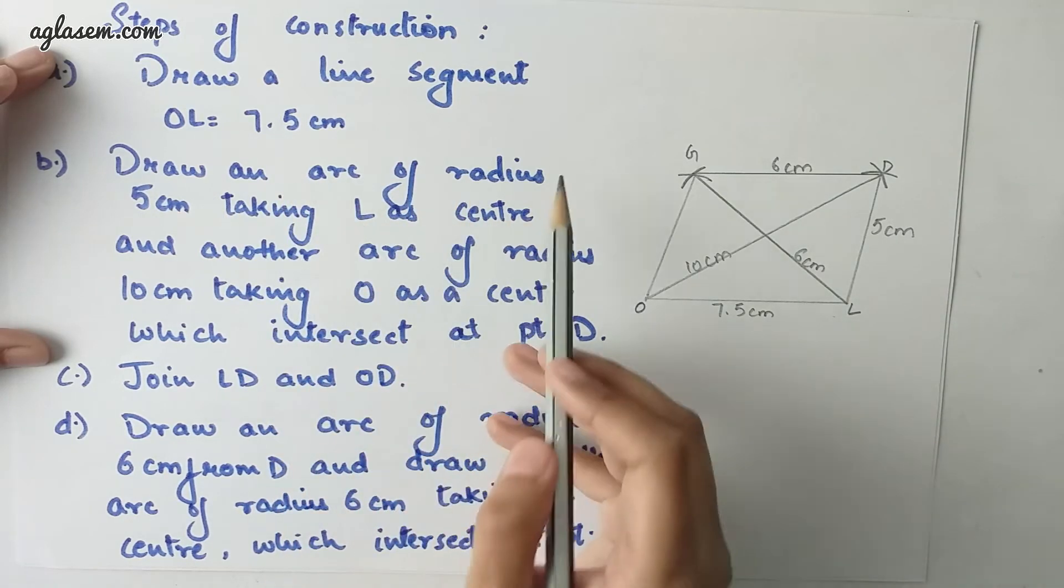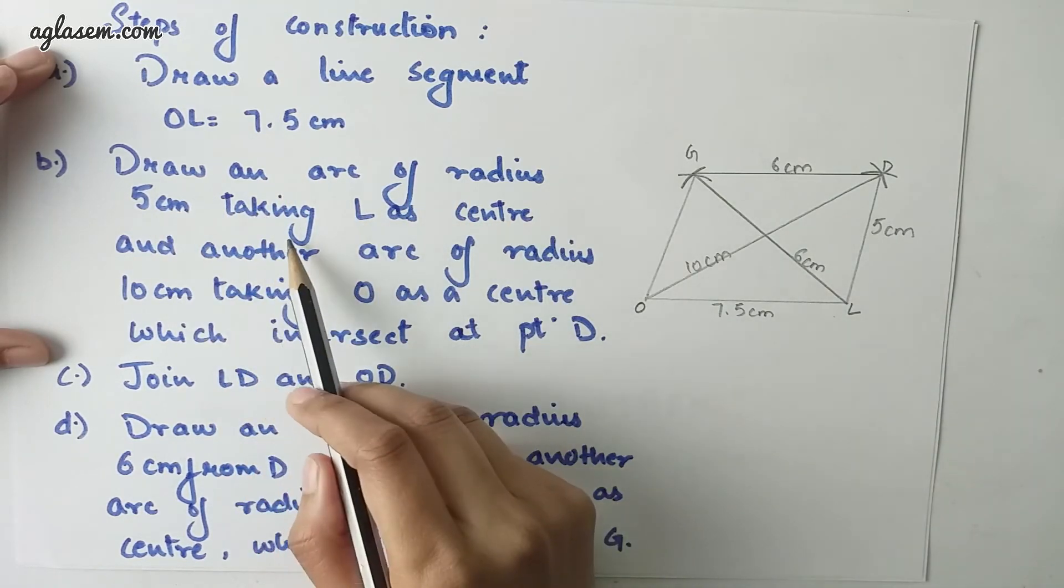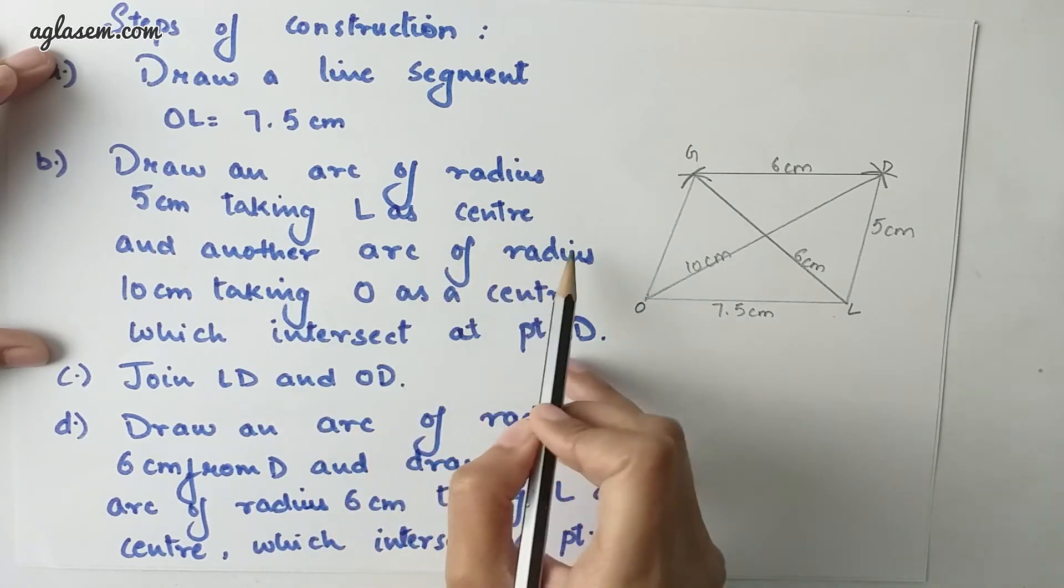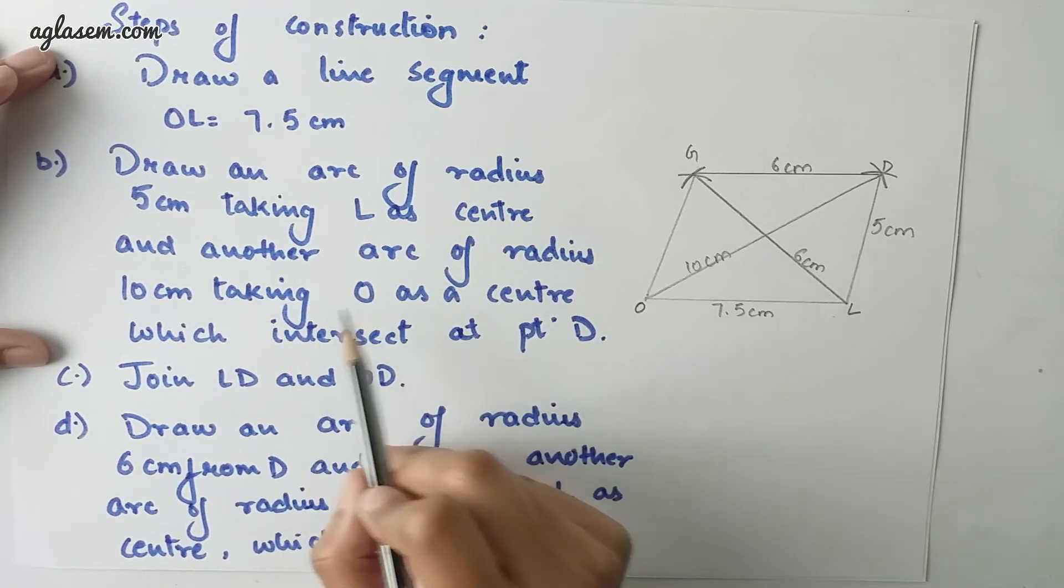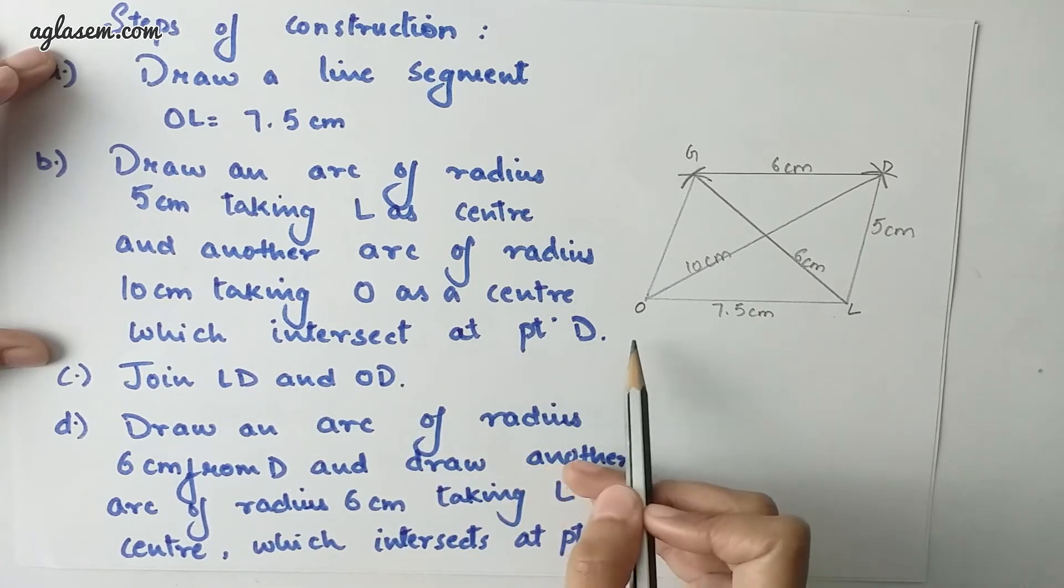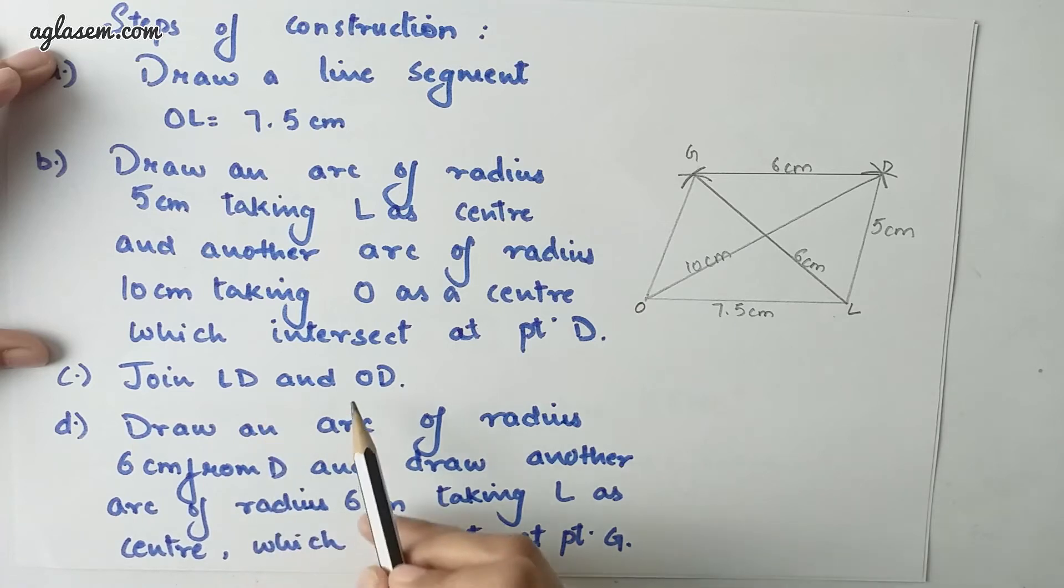Draw an arc of radius 5 cm taking L as center and another arc of radius 10 cm taking O as center which intersects at point D. Join LD and OD.